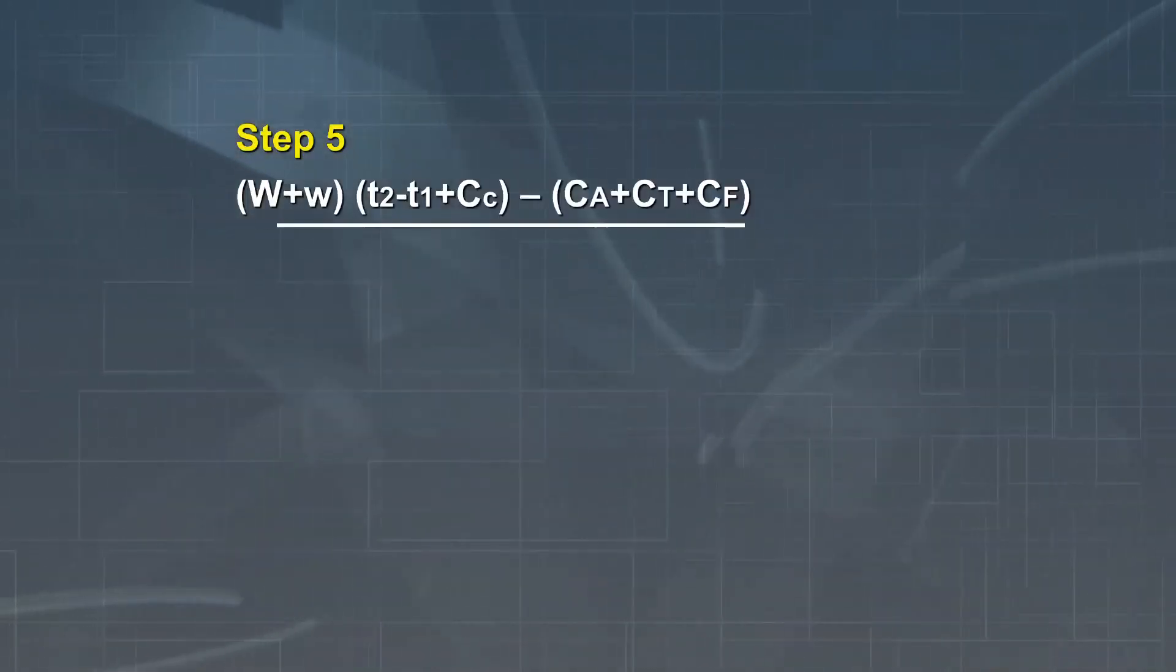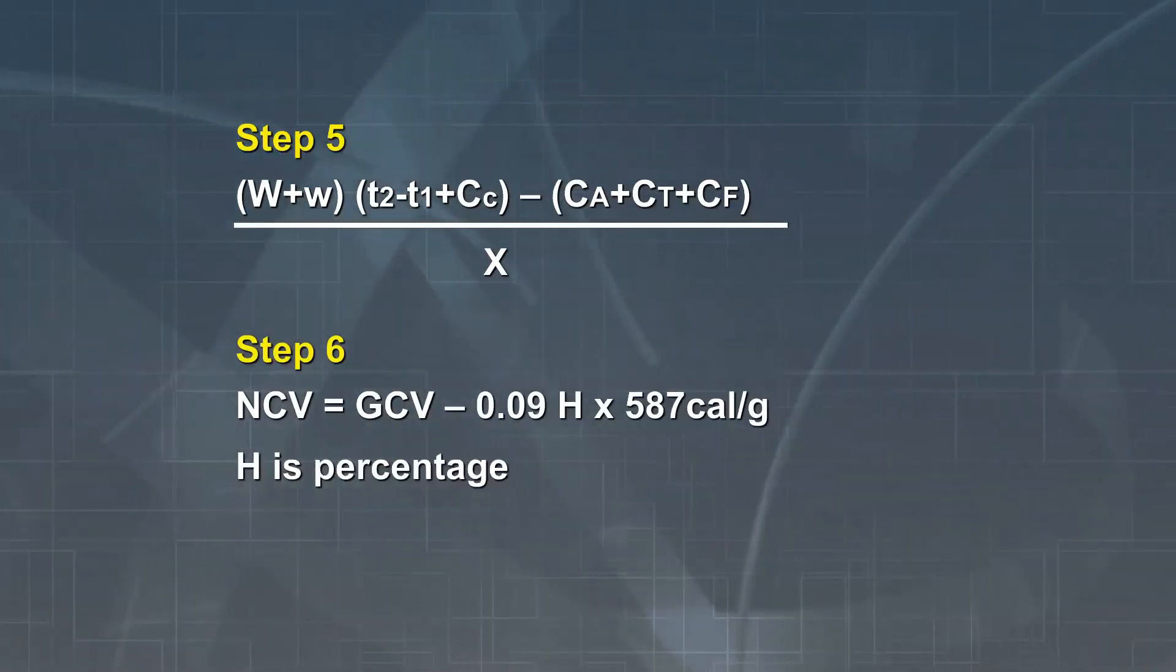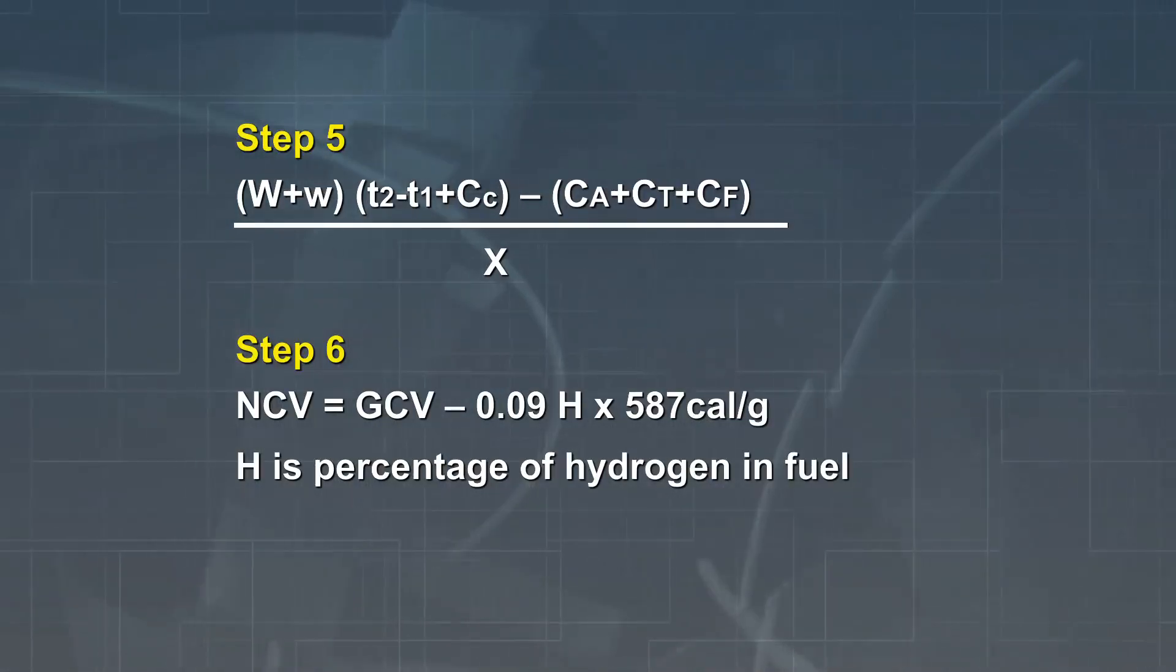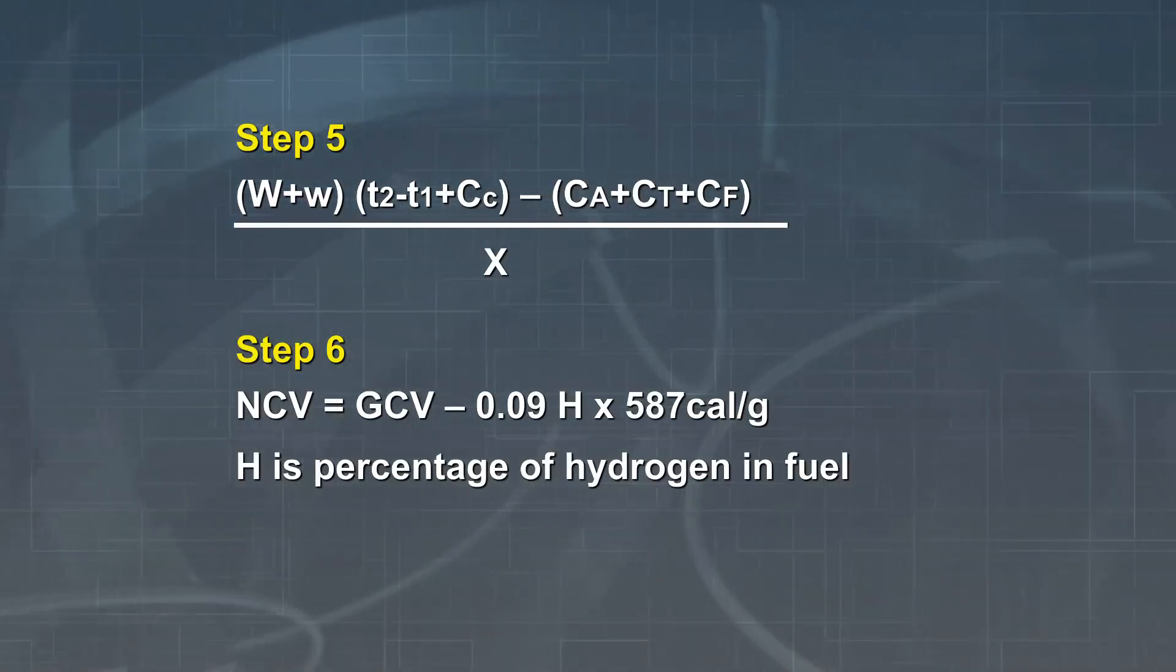Thus, the formula looks like this and the net calorific value NCV equals GCV minus 0.09H into 587 calories per gram where H is equal to the percentage of hydrogen in the fuel.